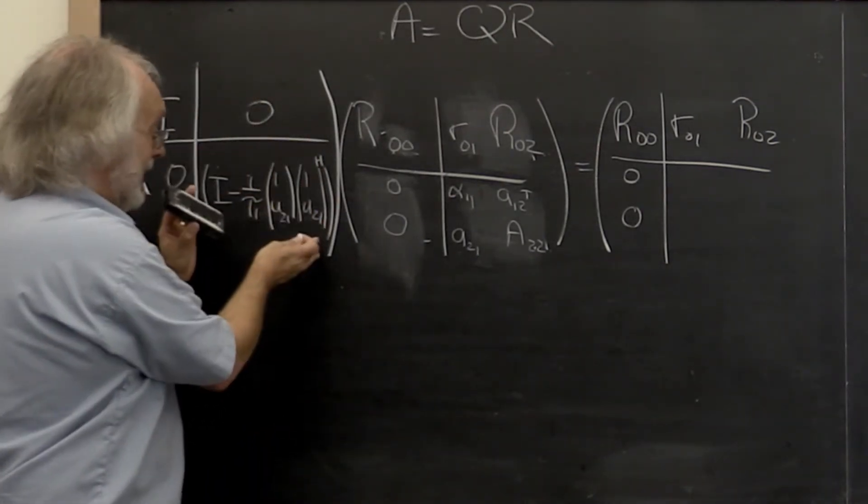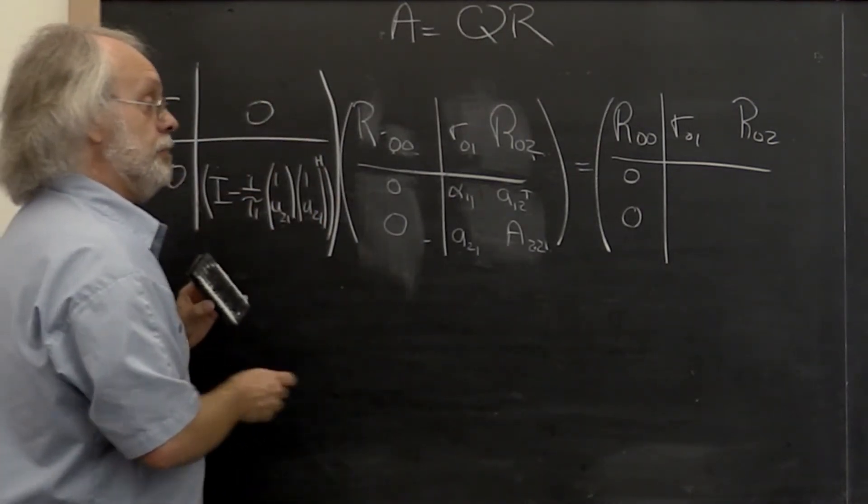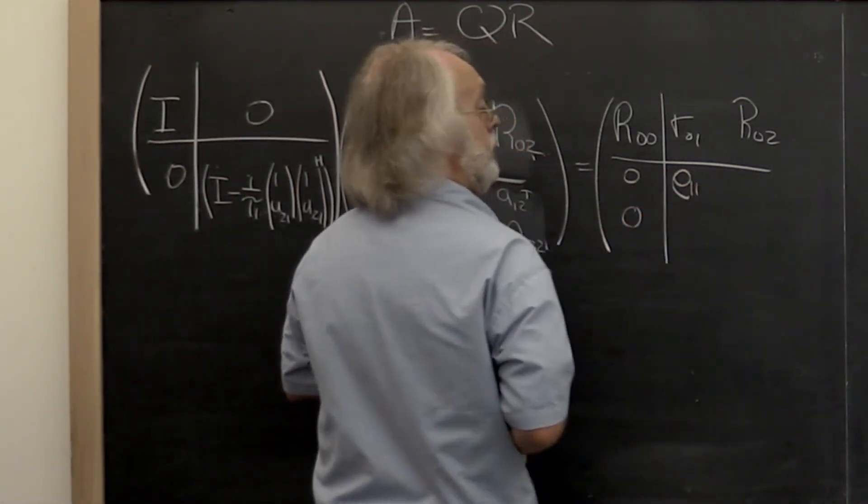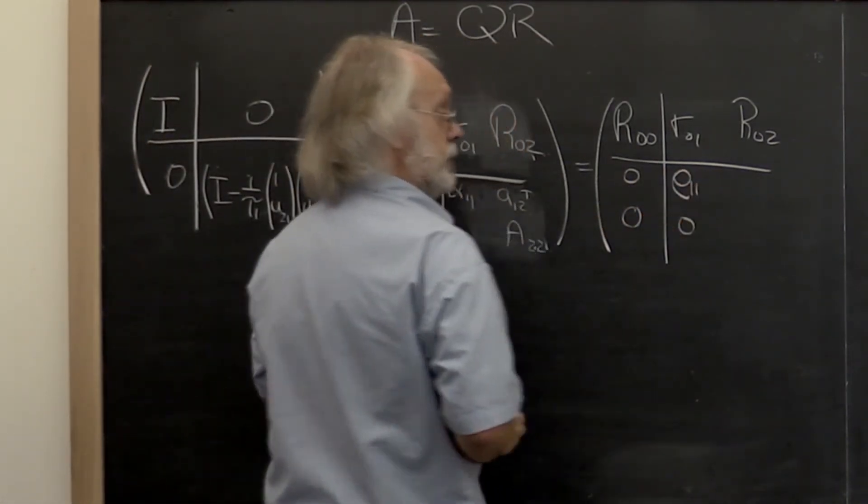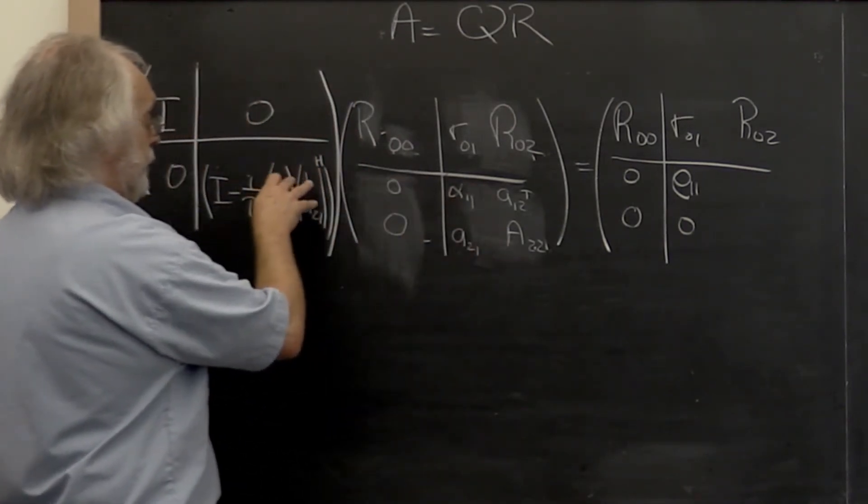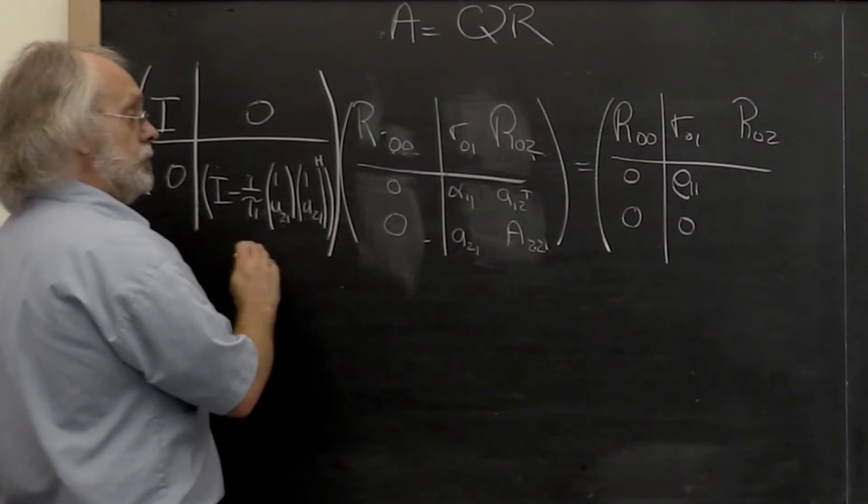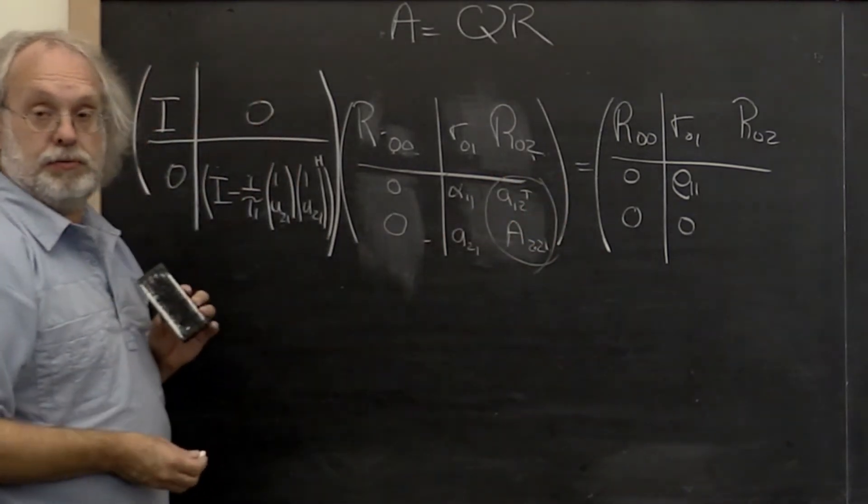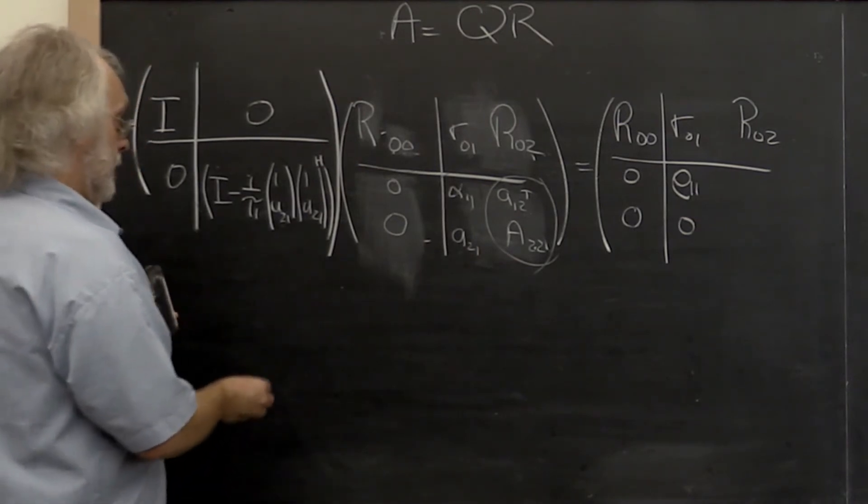We know that this by design, this Householder transformation when applied to this will give a vector with 1 with zeros below it. And now all we need to do is figure out how this Householder transformation updates this part of the matrix right here. So let's investigate that.